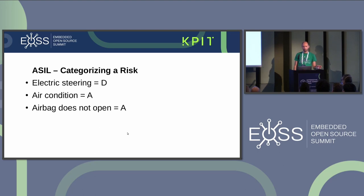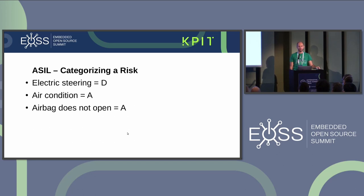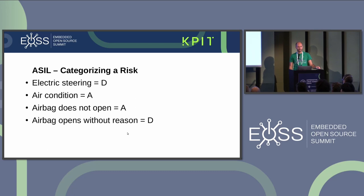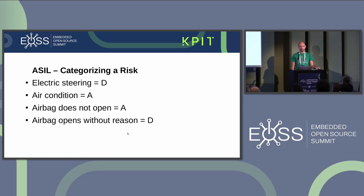Another example: what if the airbag does not open? The severity is very high because without it in a crash you will probably die. The controllability is basically non-existent. But the exposure is very low — most people never need an airbag in their whole life — so this risk would normally be ASIL level A. However, we must also consider the case that the airbag opens without reason. If it pops up in front of you, you will probably be shocked and very likely cause a crash. The severity is very high, exposure is very high since it could happen at any time while driving, and controllability is low. Therefore, that risk is categorized as ASIL level D.